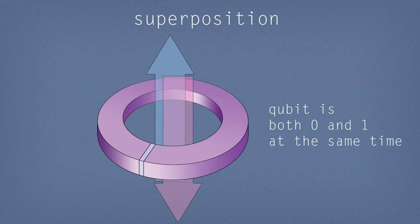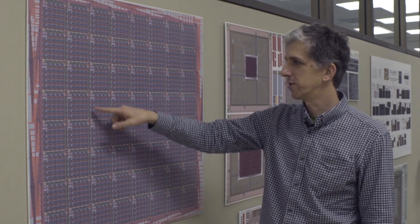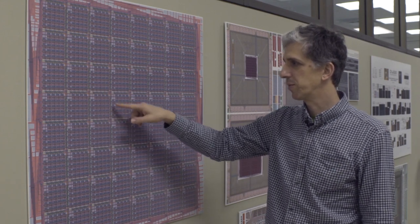So this chip is made up of repeating tiles or unit cells and each one of them is made up of eight qubits. Now if you take one of these unit cells well we can blow it up and get a better view of it here.